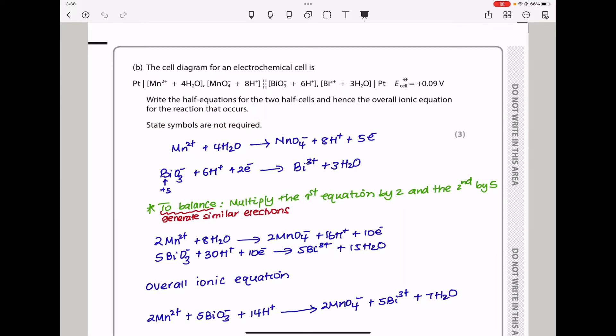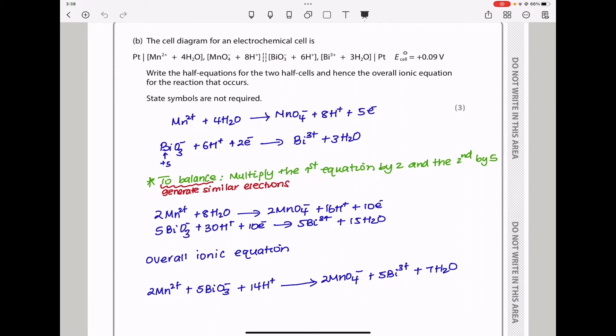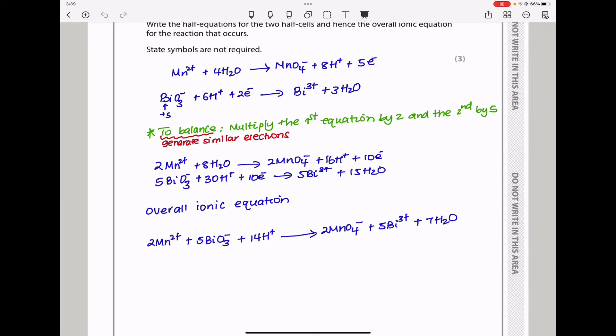We can see the reaction gives us products with 5 electrons on one side. On the other side, this is a reduction reaction with 2 electrons. To balance this equation, we multiply this by 2 and this by 5.